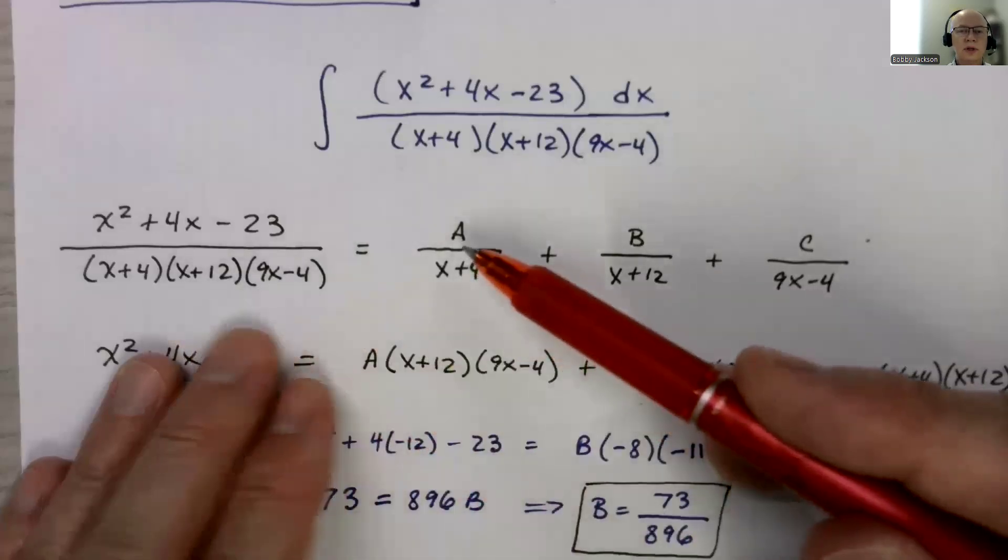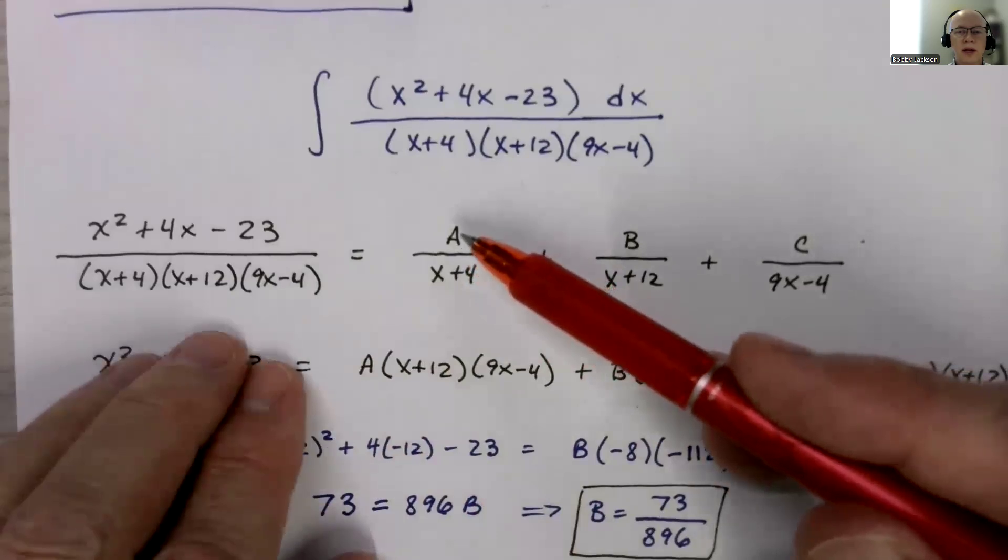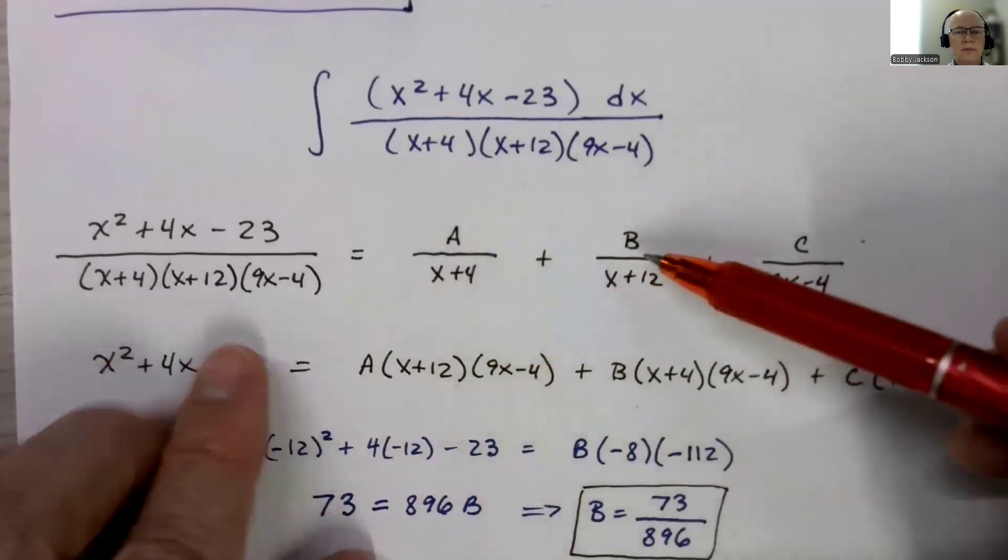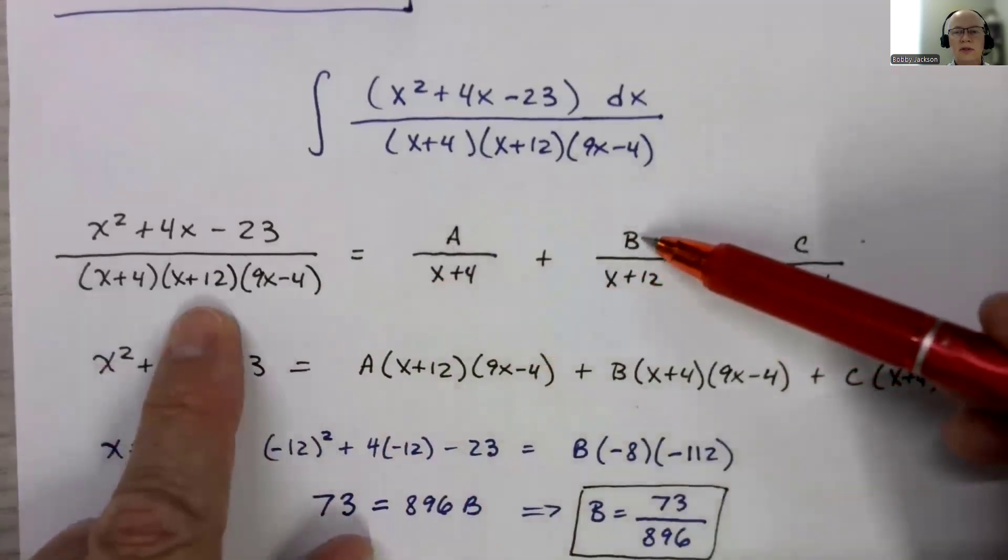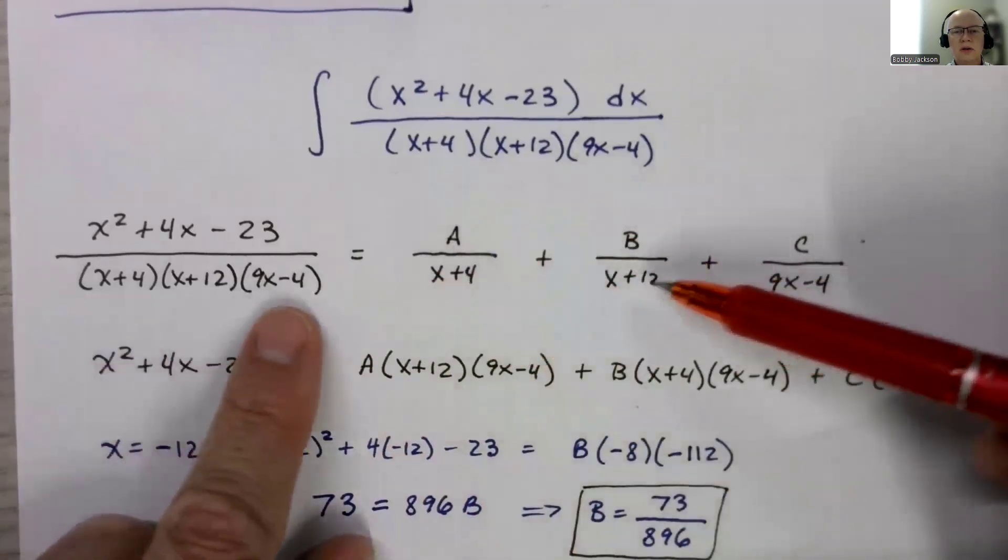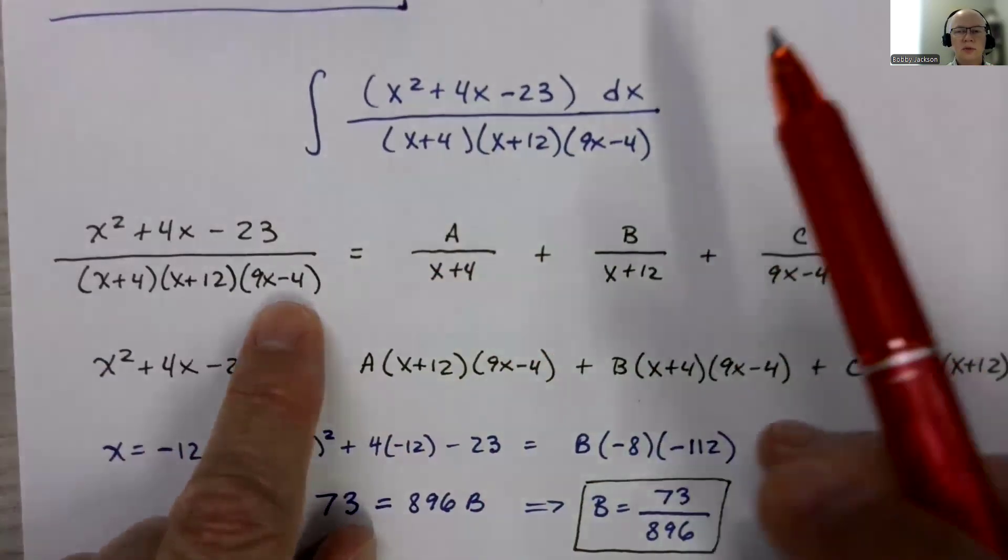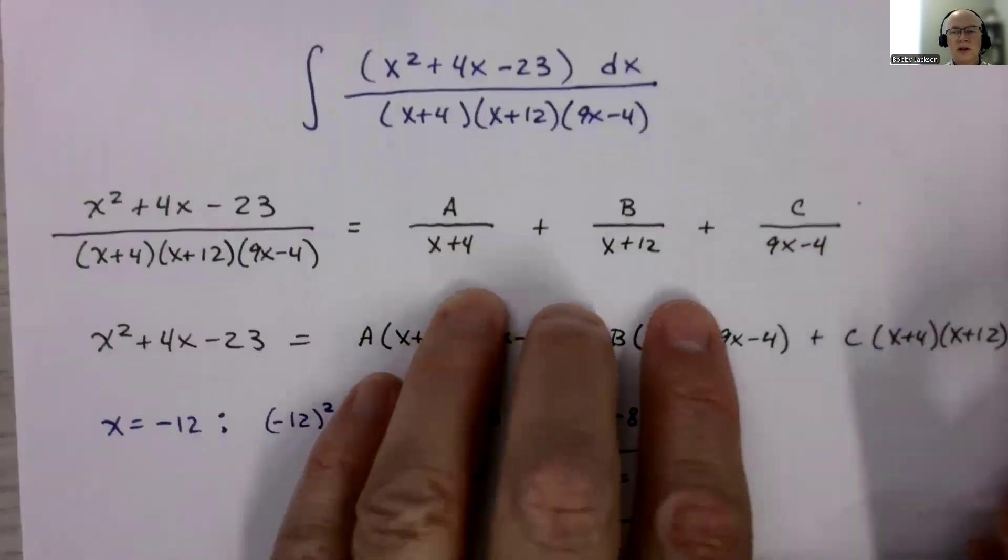The first linear factor, x plus 4, will have a fraction in our decomposition that is some constant A divided by x plus 4. And then the x plus 12 will have some constant B divided by x plus 12. And then the last linear factor, 9x minus 4, will have this fraction. So we will have potentially three fractions here. We have to find the values of A, B, and C to get this to work.